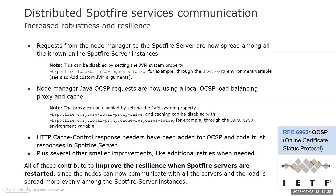We have introduced several improvements for increased robustness and resilience for communication between the Node Manager and the Spotfire servers, such as: requests from the Node Manager to the Spotfire server are now spread among the known online Spotfire server instances. Node Manager Java OCSP — Online Certificate Status Protocol — requests are now using a local OCSP load balancing proxy and cache. HTTP cache control response headers have been added for OCSP and co-trust responses in the server, and several other smaller improvements like additional retries when needed. All these changes make the communication between the Node Manager and the Spotfire server more robust when a Spotfire server instance becomes unresponsive or when you restart some of them.